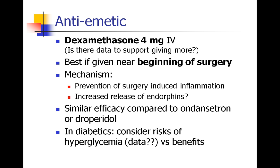Steroids can also be used as an anti-emetic. Most commonly we use dexamethasone, 4 mg IV at the beginning of surgery. Some people want to give 6 or 8 mg IV. As we will see later, that's really a tremendous amount of steroid, and we probably want to do everything we can to minimize the amount of exogenous steroids we administer to our patients. But if you look in the data, there's not a lot of data to support giving more than 4 mg IV if all you're doing is trying to prevent post-operative nausea and vomiting.